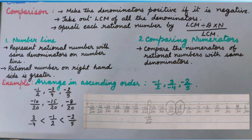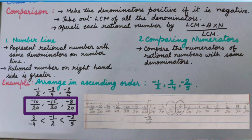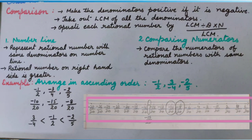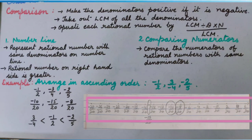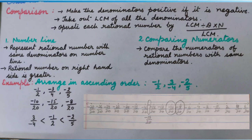Let's see how we will compare these numbers on the number line. After getting minus 10 upon 20, minus 15 upon 20, and minus 8 upon 20, we will represent these numbers on the number line. Don't forget to mark equidistant points on the number line. If you have any doubt, I am giving a link in the description on how to represent numbers on a number line.